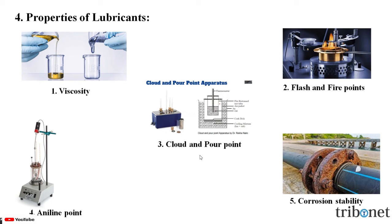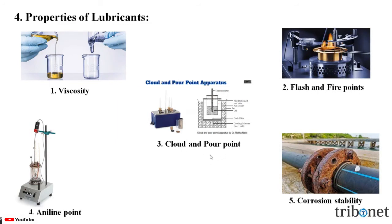The third property is the cloud and pour point. When the lubricant oil is cooled slowly, the temperature at which it becomes cloudy or hazy in appearance is called the cloud point. While the temperature at which the lubricant oil ceases to flow or pour is called the pour point. Cloud and pour points indicate the suitability of lubricant oil in cold conditions. Lubricant oils used in a machine working at a lower temperature should possess a low pour point. Otherwise, the solidification of the lubricant oil will cause the jamming of the machine.